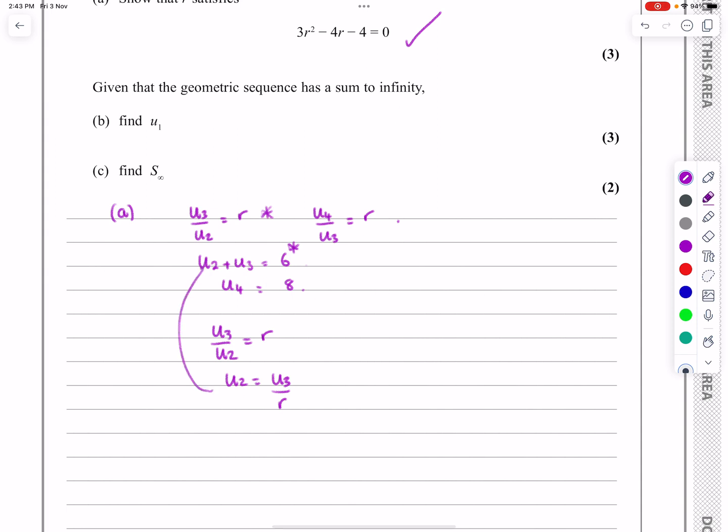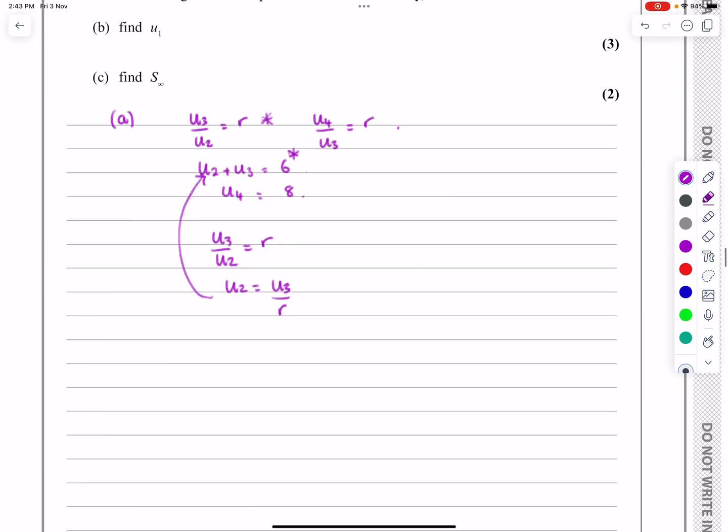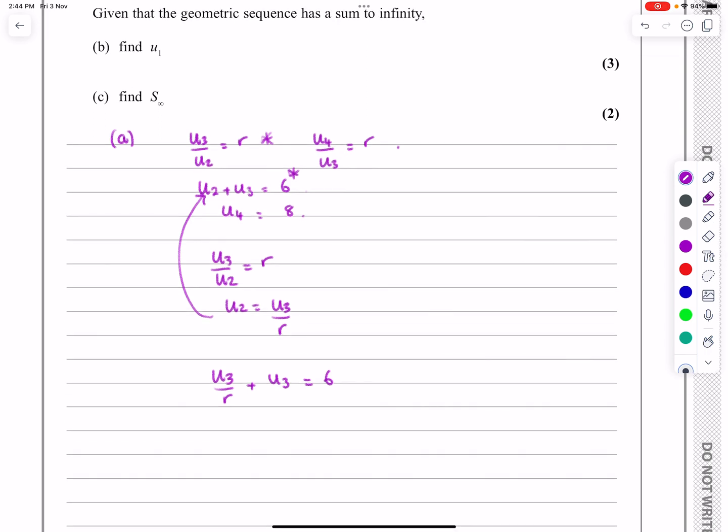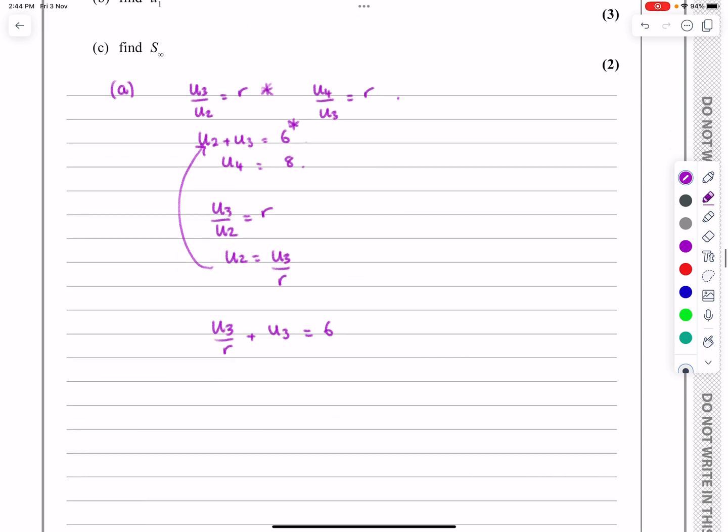So what I'm going to do now is substitute that in there, so I'm going to get U3 over R plus U3 is equal to 6. Now I can find out what U3 is, because U4 is equal to 8.